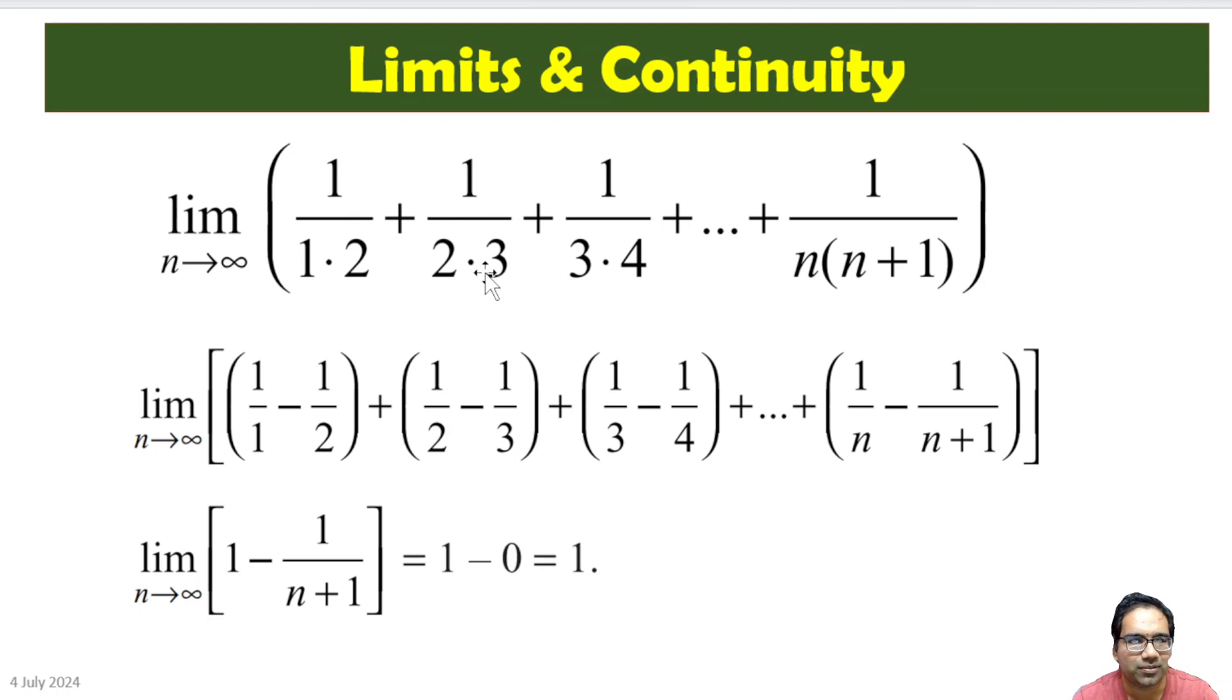1/(2·3) we can break as 1/2 - 1/3, because the denominator becomes 3·2, and the numerator becomes 3 - 2. Similarly, (3-2)/(3·2), (4-3)/(4·3), (5-4)/(5·4), and so on up to (n+1-n)/(n(n+1)).